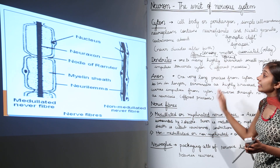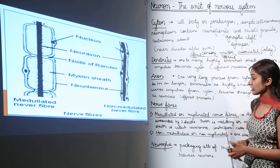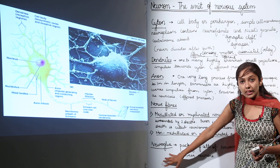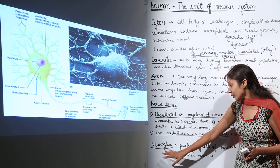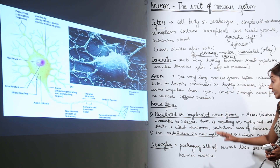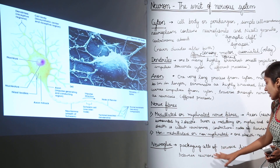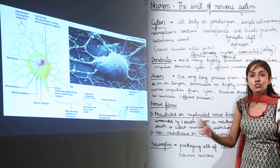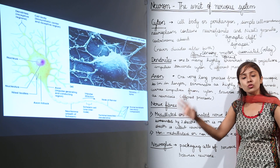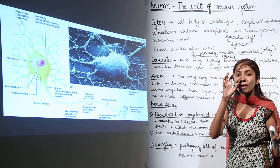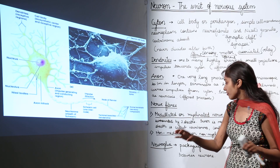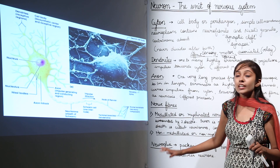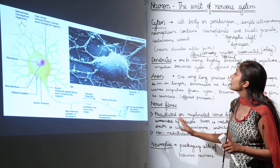The third component of nervous tissue is neuroglia — these are the packaging cells of nervous tissue, present in between the neurons.